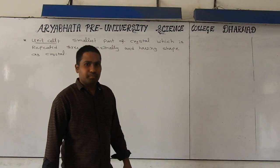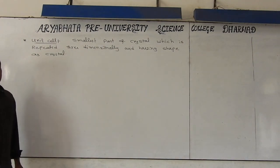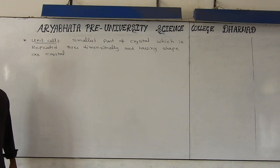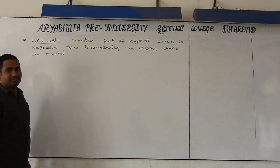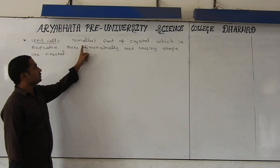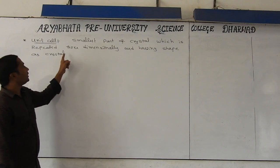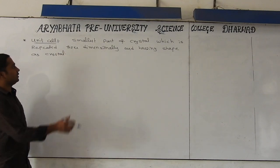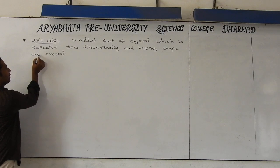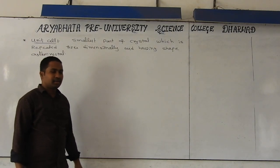Today we are going to discuss about a very important concept, that is nothing but unit cell and types of unit cells. What is the meaning of unit cell? This is the smallest part of the crystal which is repeated three-dimensionally and having shape as a crystal — is called a unit cell.